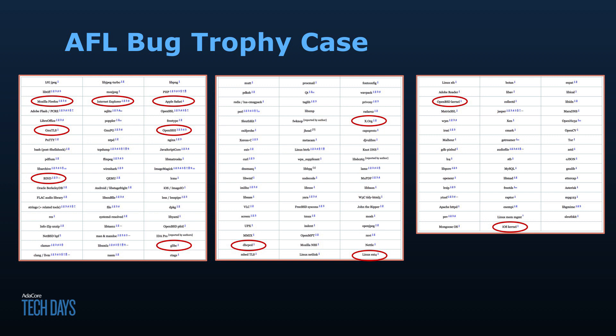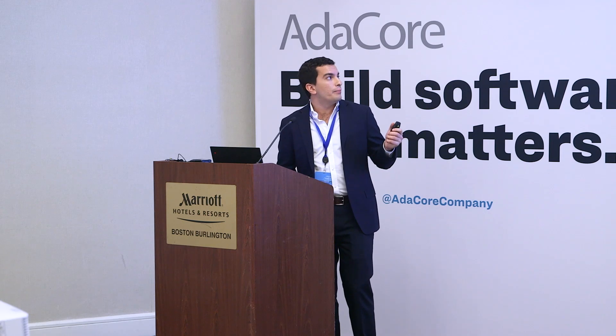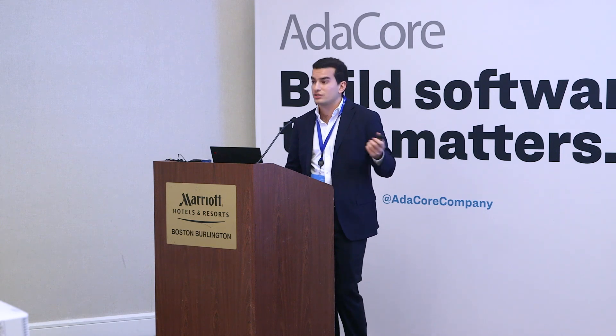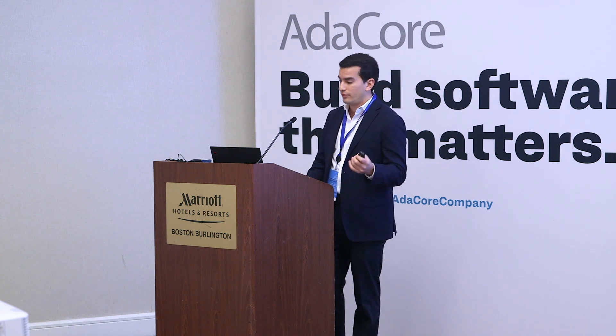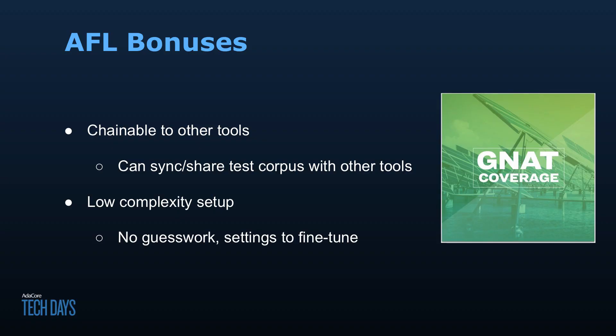We chose AFL because it's effective, and as a result it's used all over tech. AFL publishes their entire bug trophy case on their website, and it includes bugs found in Mozilla Firefox, Safari, the iOS kernel, and OpenSSL. Many of these bugs were found by external people who just decided to fuzz the application — because remember, you don't need access to the source in order to fuzz something.